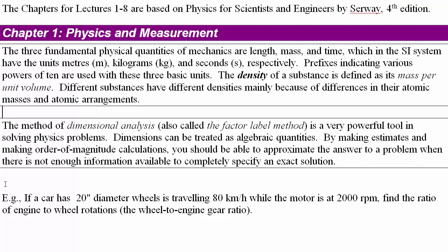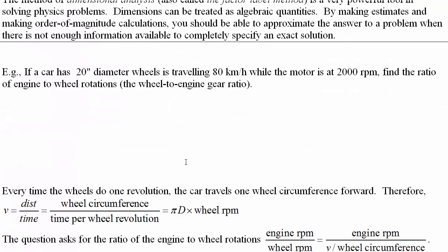Here's an example you can try dimensional analysis for. If a car has a 20-inch diameter wheel and it's traveling 80 kilometers an hour while the motor is at 2,000 RPM, find the ratio of engine to wheel rotations, the wheel to engine gear ratio. So the ratio should be dimensionless. We're going to take the wheel turn ratio and divide it by the engine turn ratio. But we don't have the wheel turn ratio. We have the diameter of the wheels and the forward velocity of the car. We'll need to do a little bit of physics first.